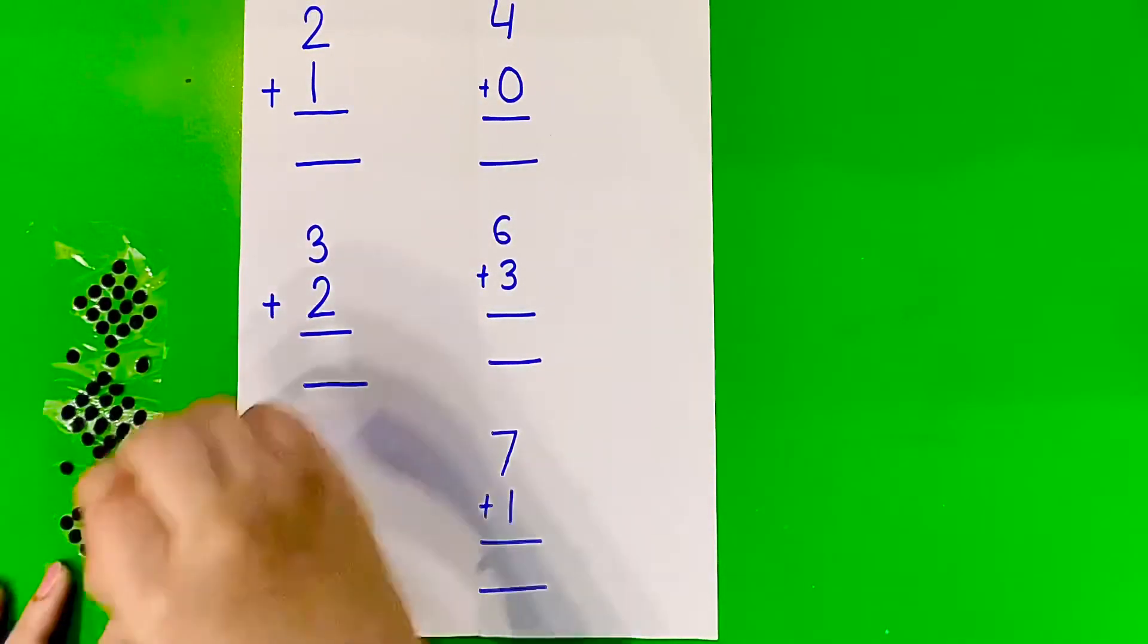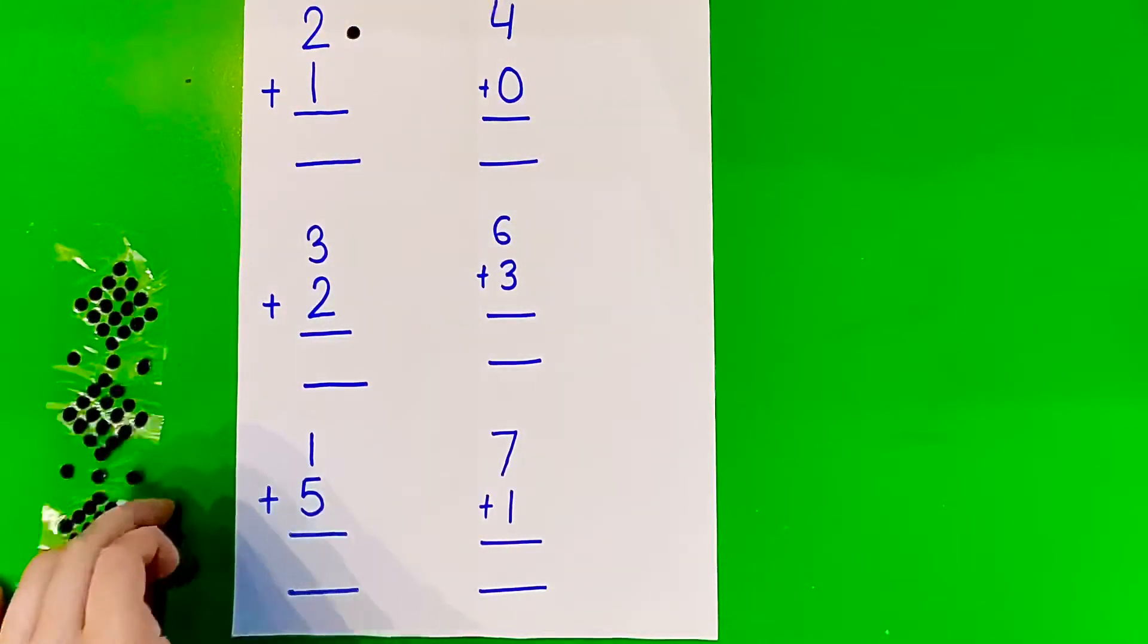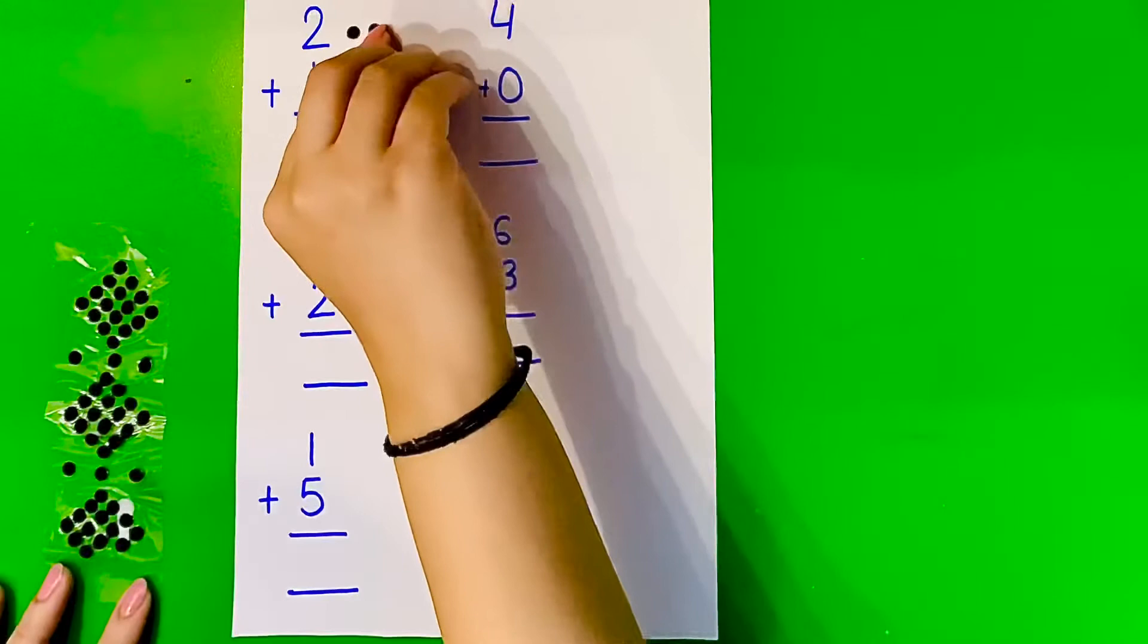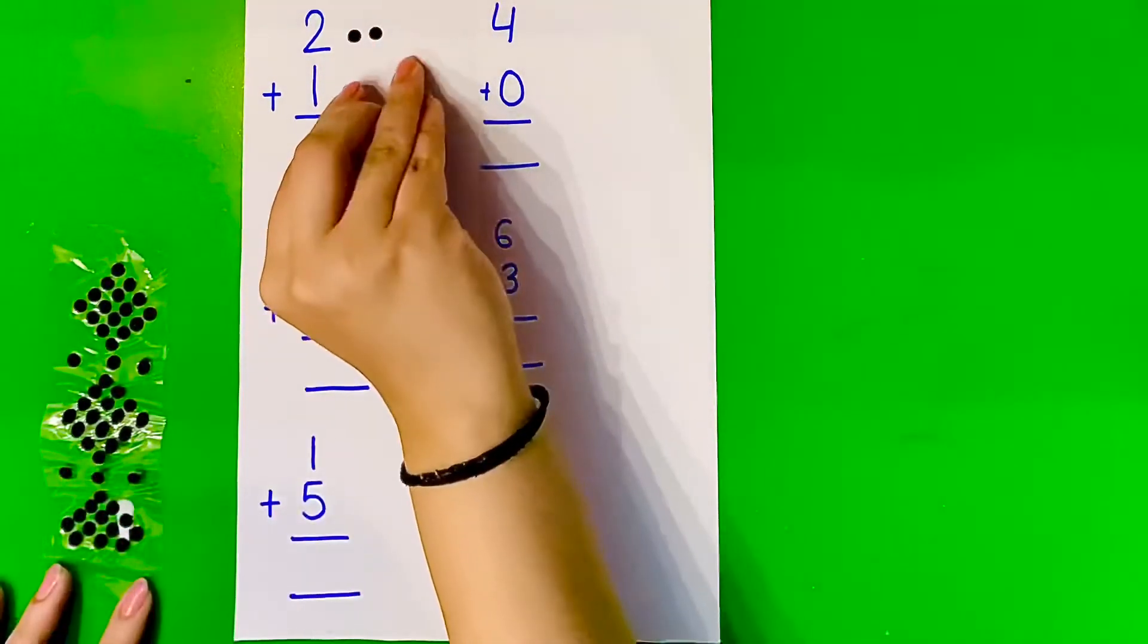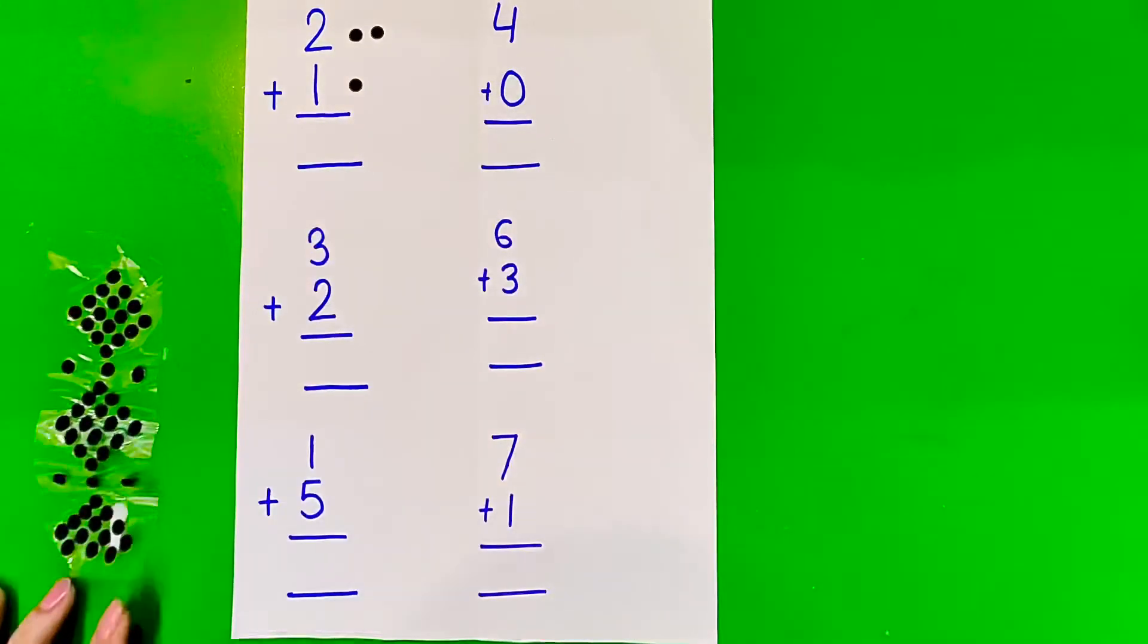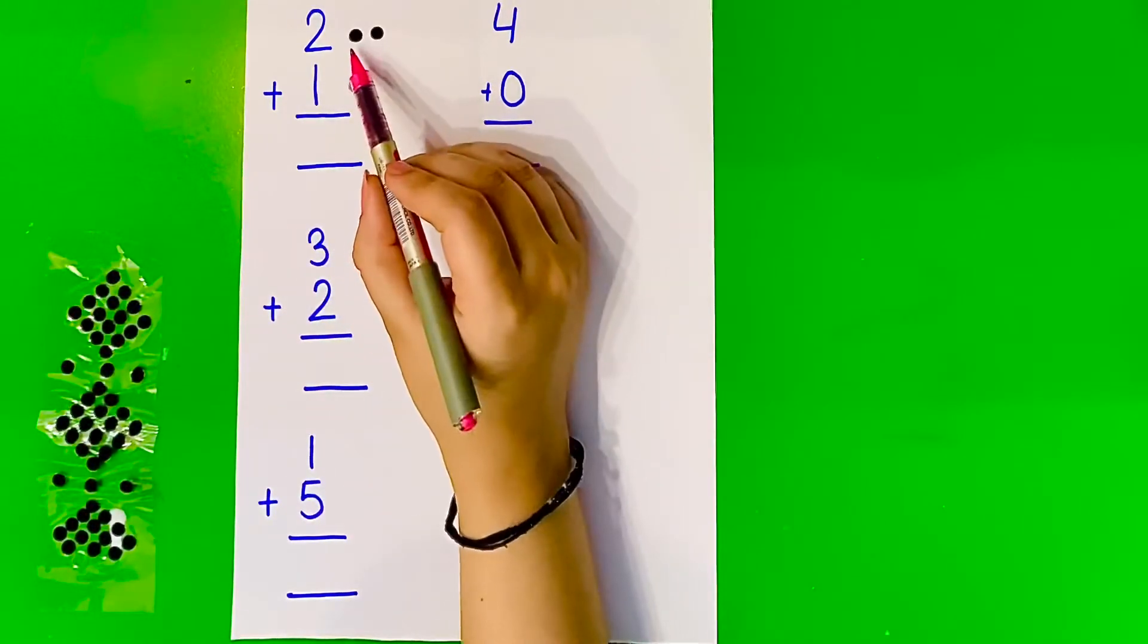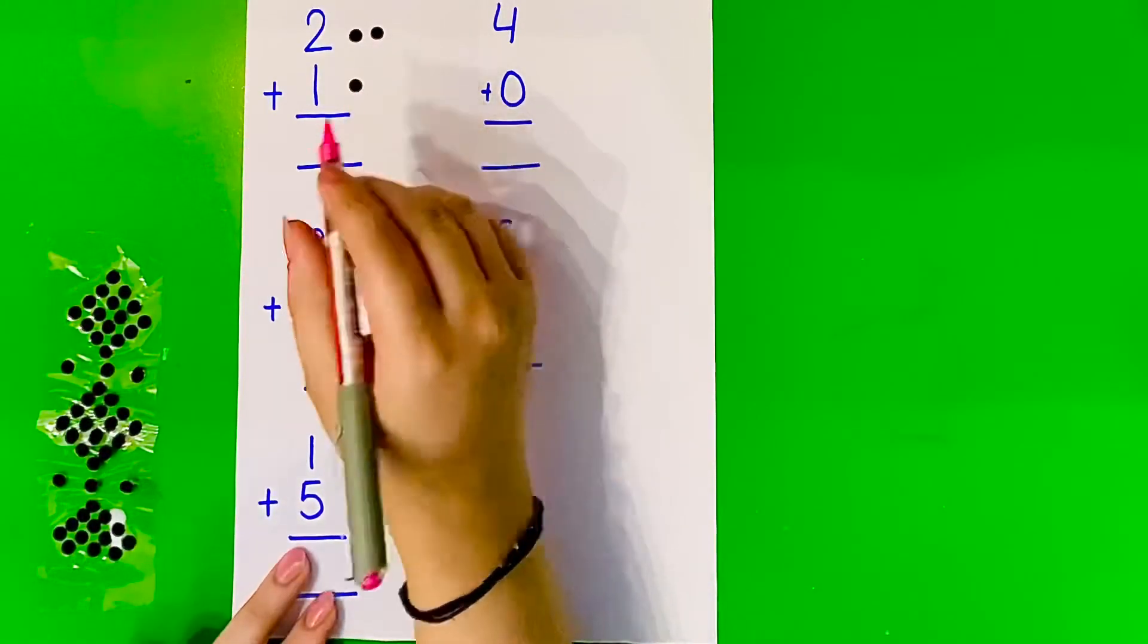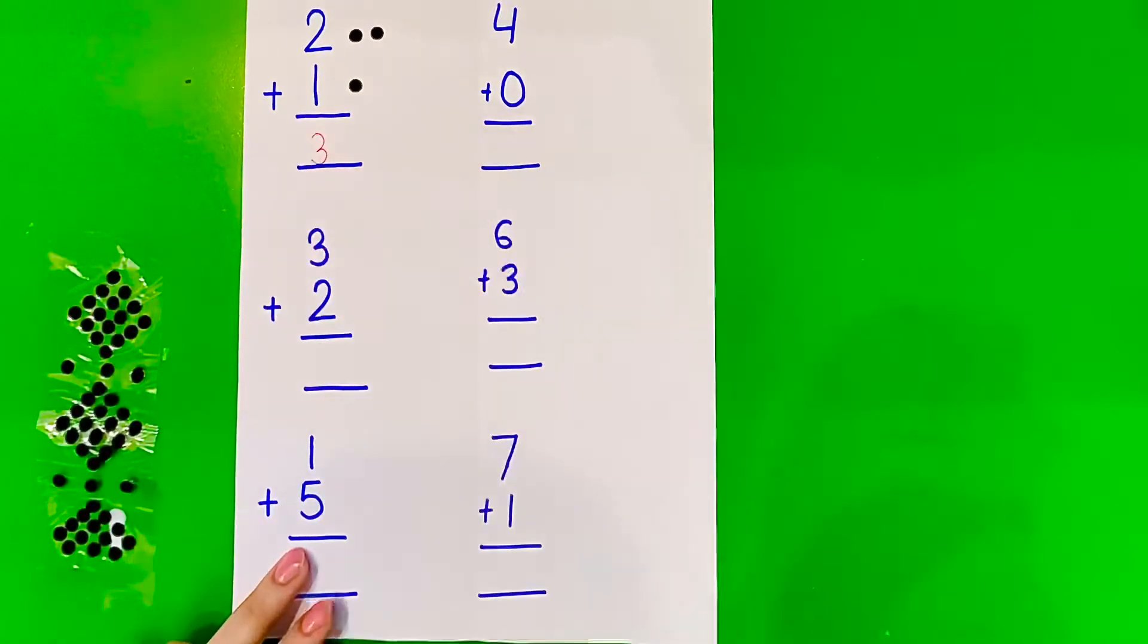Let us see. 1, 2... The next number is 1. Now we have to count and write. So 2 plus 1 is 1, 2, 3. We're going to write 3 here. Now let us solve the next equation.